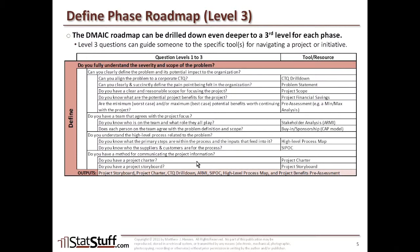Do you have a project charter? If you're not sure what that is or you know you don't have one, refer to the project charter as a tool to help you. And then finally, do you have a project storyboard? If you don't or you're not really sure what that means, refer to the project storyboard as a tool to help you. The bottom line is that we want to answer this top-level question: Do you fully understand the severity and scope of the problem? Let this roadmap be a guide through each of these different layers, pointing you to the different tools that can help you, so you can ultimately answer this question for the Define phase. Once you can answer yes to all these questions, then you're ready to move on to the next phase — the Measure phase.